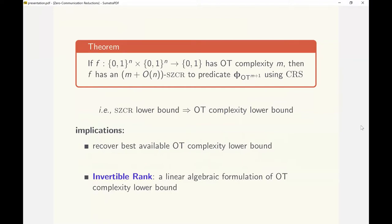Secondly, due to the simplicity of the SZCR model, it allows a purely linear algebraic characterization. We use this characterization to define a quantity called invertible rank of the truth table of a function. A bound on invertible rank would imply a bound on the OT complexity of the function.